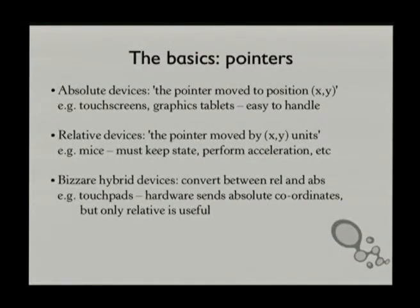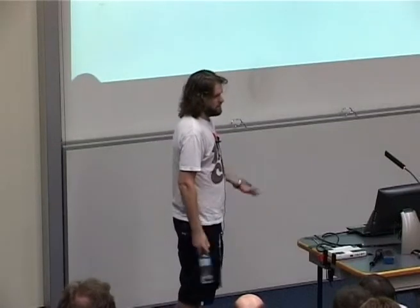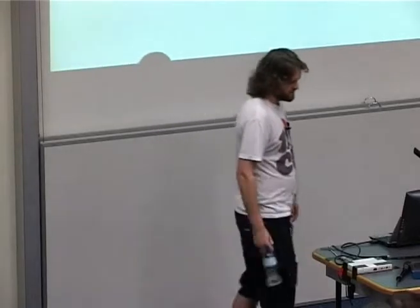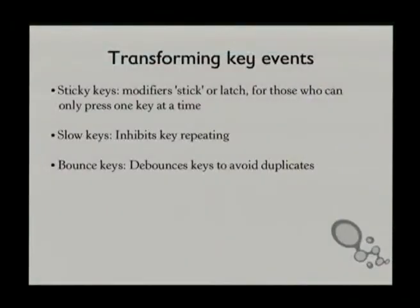Pointers are really quite easy. You've got your touchscreens, tablets and such that just tell you it's moved to this coordinate — there's nothing to go wrong. Relative devices like classic mice tell you you moved three pixels to the right and one pixel down. It's not too difficult, but if you want to do them right, you need to do acceleration and keep all your state around. The weird ones no one likes are touchpads, because they give you absolute coordinates telling you exactly where you've pressed on the touchpad, but you really want that to be relative unless you want your touchpad mapped to your entire screen. So they're fairly unpleasant, and I don't touch synaptics.